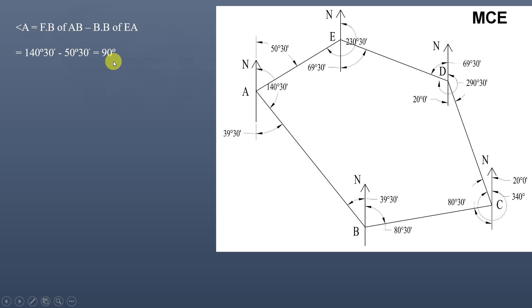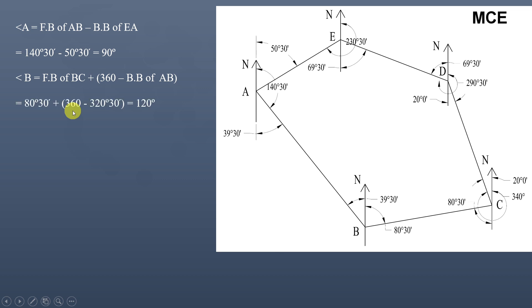Angle B equals the fore bearing of BC plus 360° minus the back bearing of AB, as shown in the figure. That is 80°30' + 360° − 320°30' = 120°.